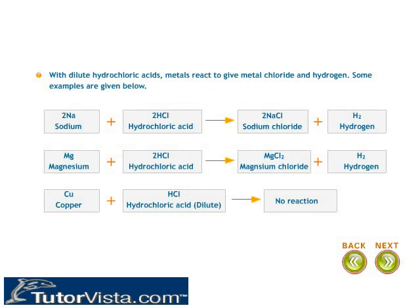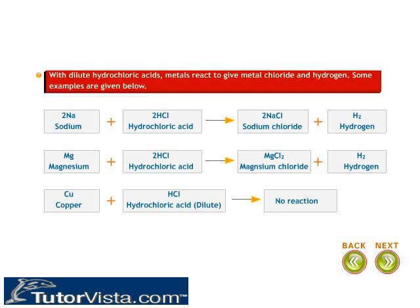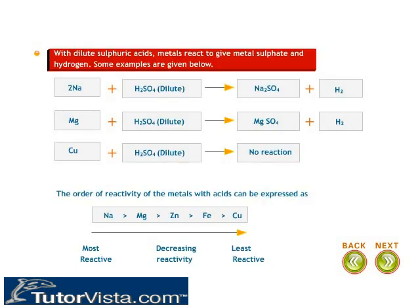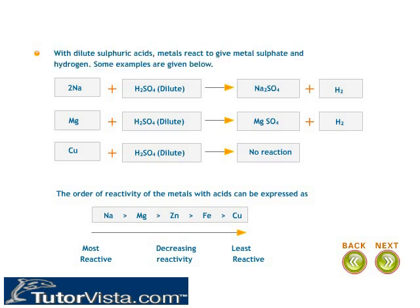Most metals react with dilute acids by replacing hydrogen and forming a salt, and hydrogen gas is released. With dilute hydrochloric acid, the products are metal chloride and hydrogen. With dilute sulfuric acid, metals react to give metal sulfate and hydrogen. The order of reactivity of the metals with acids can be expressed as shown here.